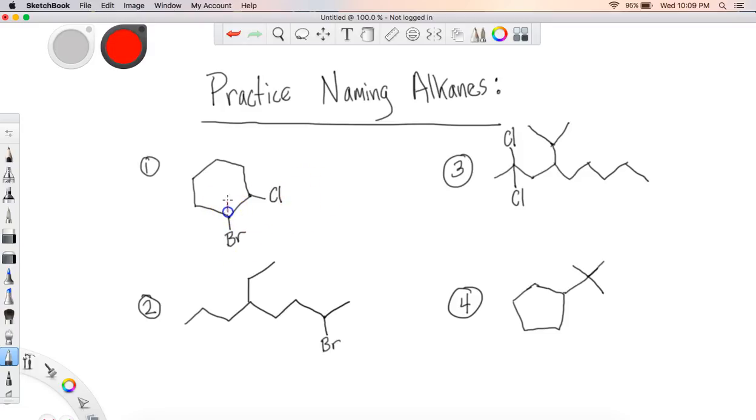So the numbering doesn't matter that much. I'll go ahead and do the one with the bromo and the two with the chloro in this case. And so what I'm going to end up with is 1-bromo, and remember this is not numerically—I am listing this alphabetically. So B comes before C, so 1-bromo-2-chloro cyclohexane.